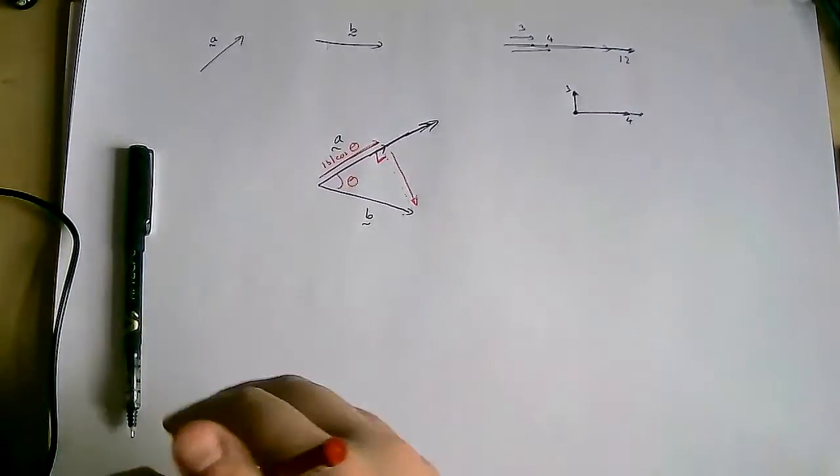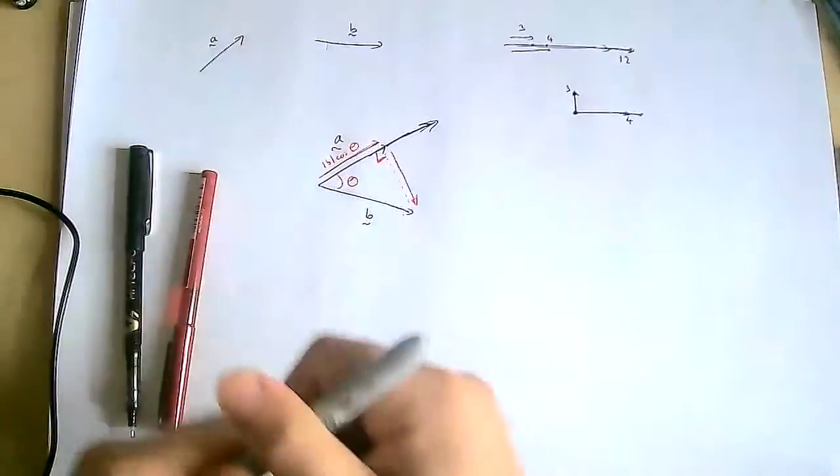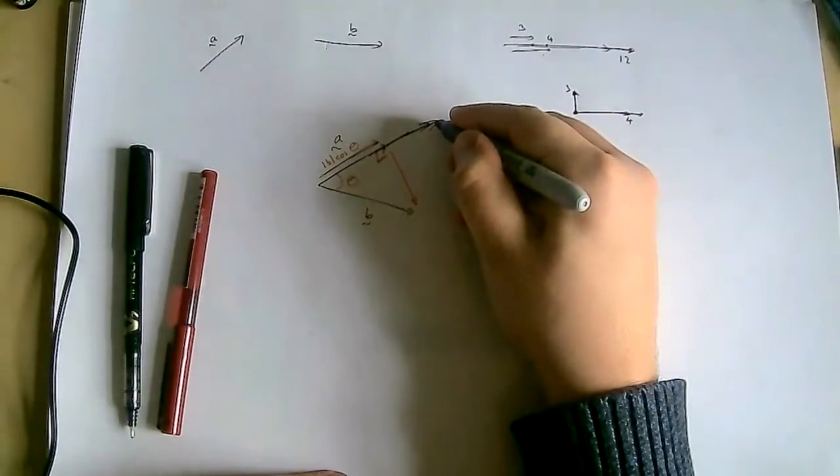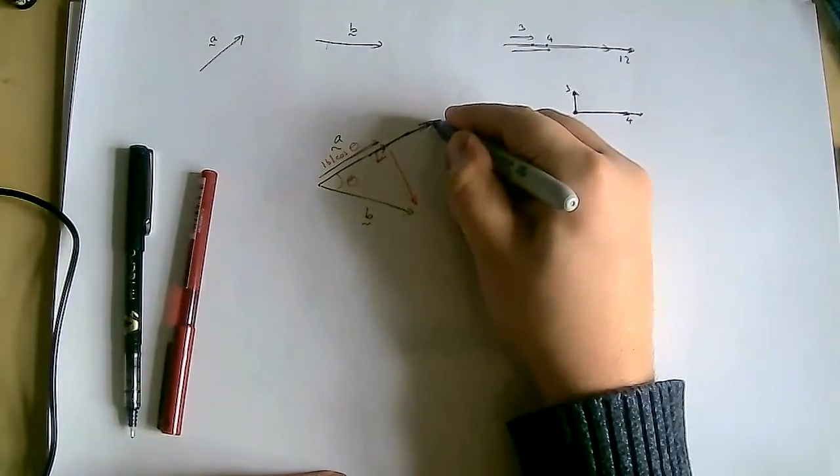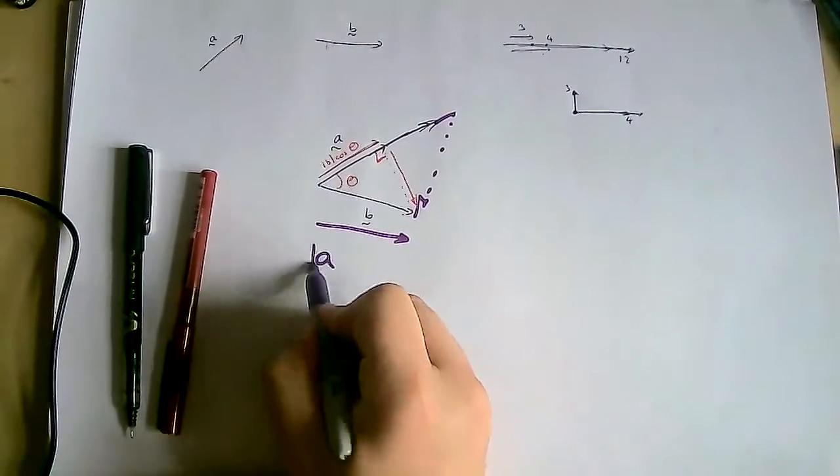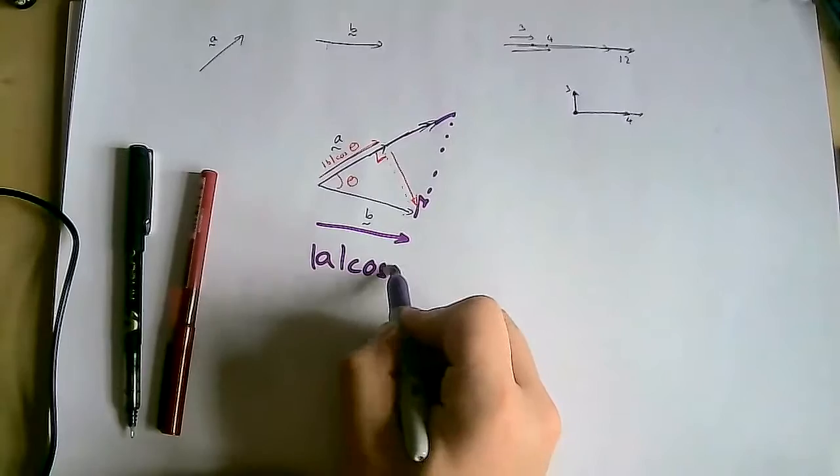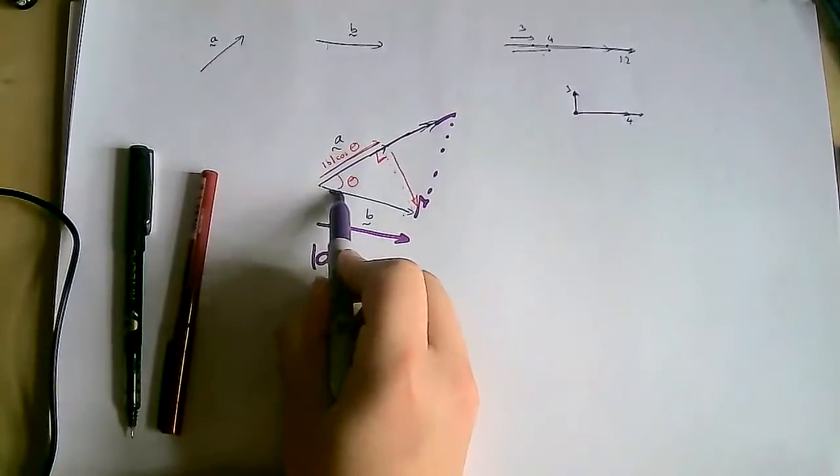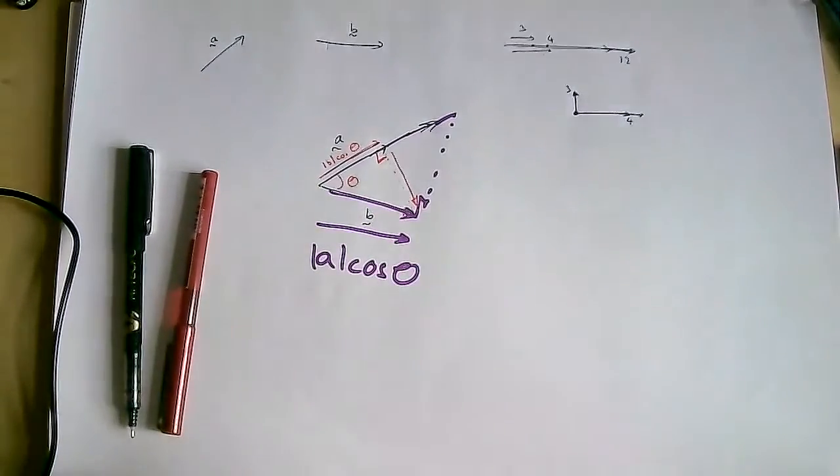It also turns out this is fully symmetrical. So if I similarly project A onto B, this section here is going to be the size of A, sorry, cosine theta, and the contribution of B in this direction is B, and they again multiply to the same scalar. It's a neat symmetrical thing. So it's about projection.